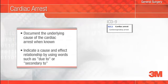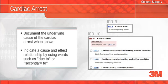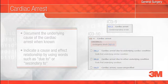ICD-9 provided a single code for cardiac arrest. ICD-10 provides the ability to report the cause of the cardiac arrest when known or suspected, as due to an underlying cardiac condition or other condition. Your documentation should indicate a cause and effect relationship by using words such as 'due to' or 'secondary to.'